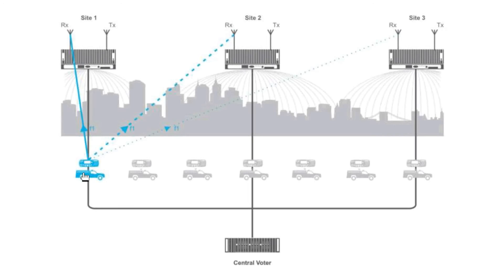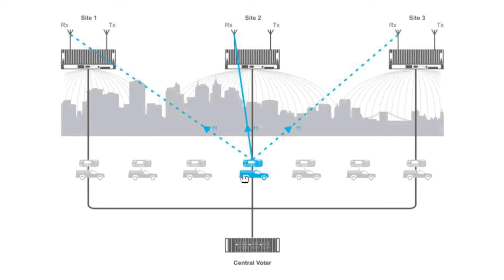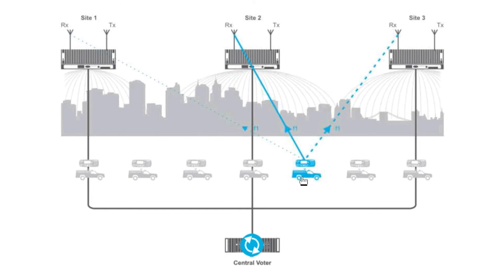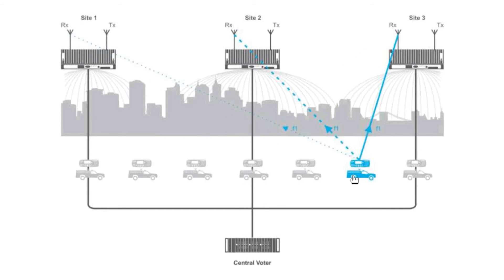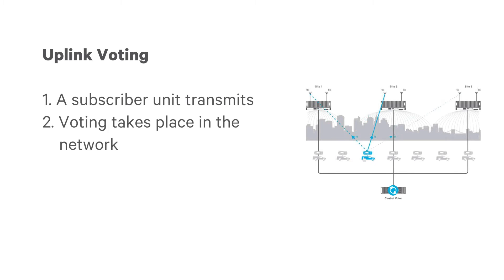Uplink voting, which takes place in the network, usually involves a network that has repeaters receiving on the same frequency but transmitting on different frequencies. The network selects the best signal for repeating throughout. A subscriber unit transmits, and voting then takes place in the network.